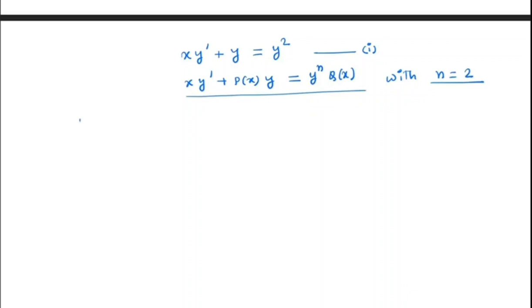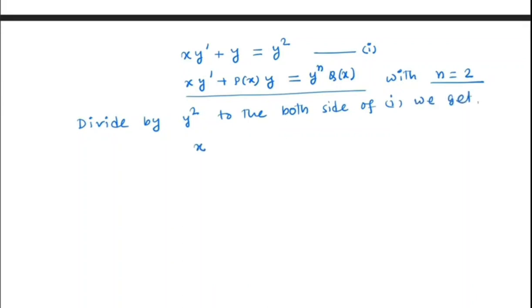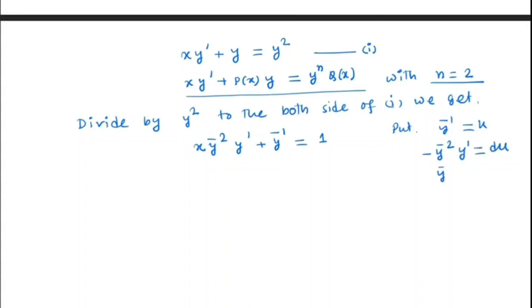We divide both sides of equation 1 by y squared. So we get x times y^(−2) times y prime plus y^(−1) equal to 1. Now put y^(−1) equal to u, so that means y^(−2) times y prime equals du/dx. Therefore y^(−2) times y prime equals minus u prime. So we get minus x times u prime plus u equal to 1.